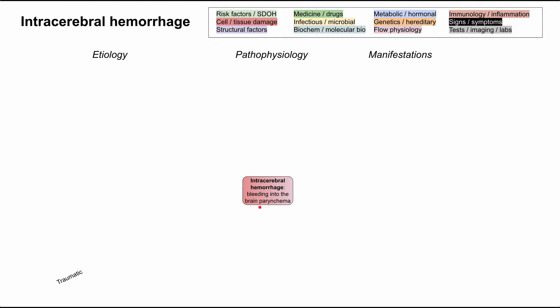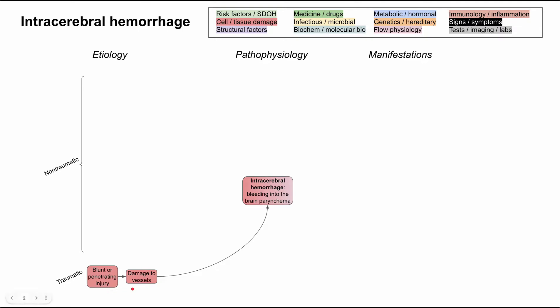The etiologies of intracerebral hemorrhage can be categorized as traumatic and non-traumatic. The traumatic cause is straightforward: blunt or penetrating injury damages blood vessels, which triggers a bleed into the brain parenchyma. The non-traumatic causes are much more varied, and we'll go through each of them one by one.